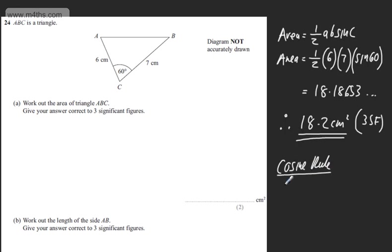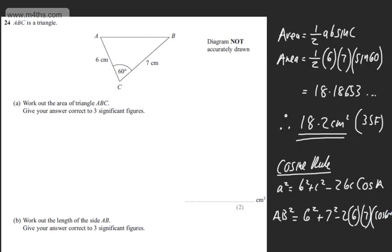So the cosine rule, we have now that A squared is equal to B squared plus C squared minus 2BC cos A. So what I can say then is the following. I can say that AB squared, and that's this length right here, is going to be equal to 6 squared plus 7 squared minus 2 lots of 6 times by 7 times by cos of 60 degrees.